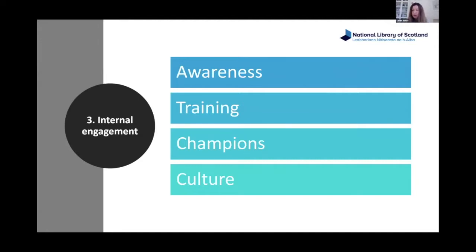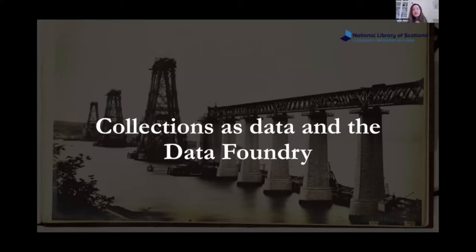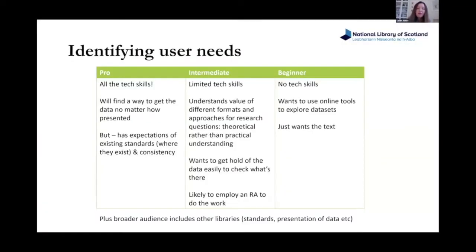I'll talk about how we're making collections available as data and our Data Foundry platform. Going back to square one: we wanted to make collections available as data to users, so we looked at user needs and crudely came up with three broad categories from beginner to advanced. Beginner users don't have any technical skills and just want text. At the other end are advanced users with all the technical skills who will find a way to get our collections regardless, though they do have expectations about standards.